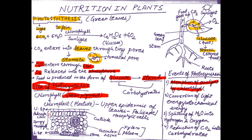The layer just below the upper epidermis is palisade cells. There is also a layer called vascular tissue which is composed of xylem and phloem. Xylem is the food conducting tissue and phloem is the water conducting tissue.